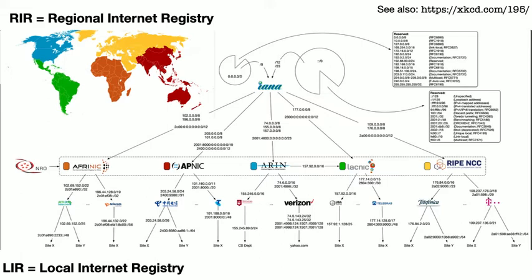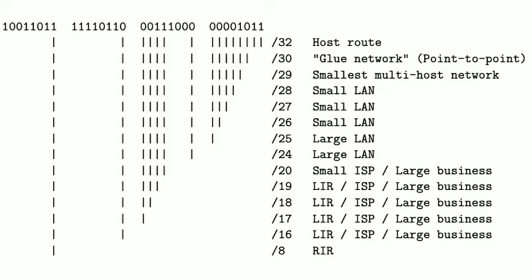For example, we know that Stevens, having been assigned the 155.246/8 netblock, has assigned the 155.246.89/24 netblock to the CS department. We can also observe that Verizon, after having bought Yahoo a few years ago, became the new owner of a netblock shown here, and specifically assigned several IP addresses to a specific service. The allocation from IANA at the top down to the end sites often follows some general rules. For IPv4 space, IANA only handles slash-8 allocations, which it hands to the RIRs. The RIRs tend to divide the slash-8s into smaller networks and hand out, for example, slash-16s to LIRs, which then can divide the network further.